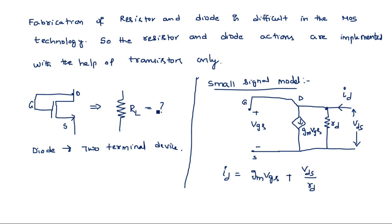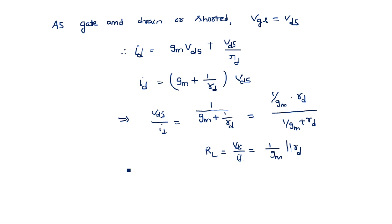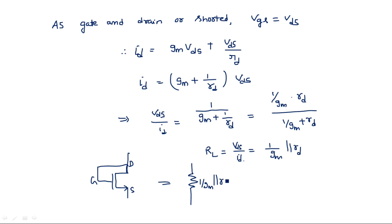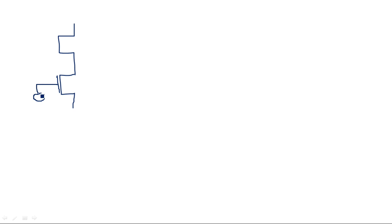The equivalent resistance value of the transistor with gate and drain short-circuited is R = (1/Gm) parallel Rd. We now use this transistor in the circuit as a load instead of a resistor — that is the meaning of diode-connected load. This diode-connected load is placed at the pull-up position and we have the same circuit in the pull-down position.